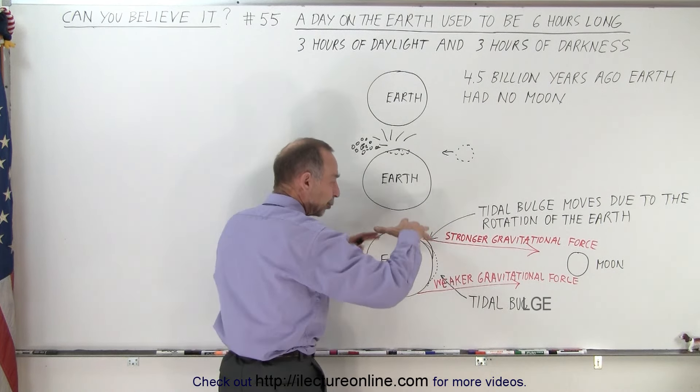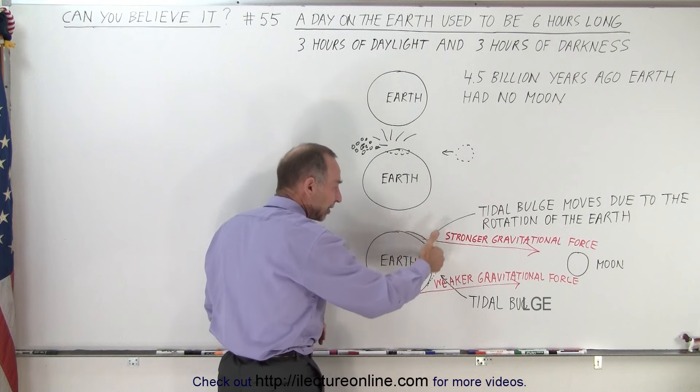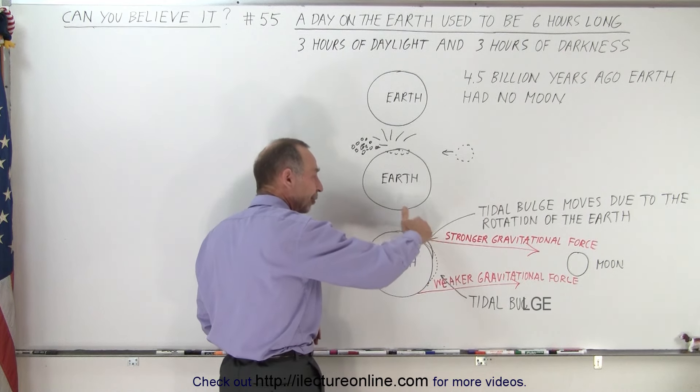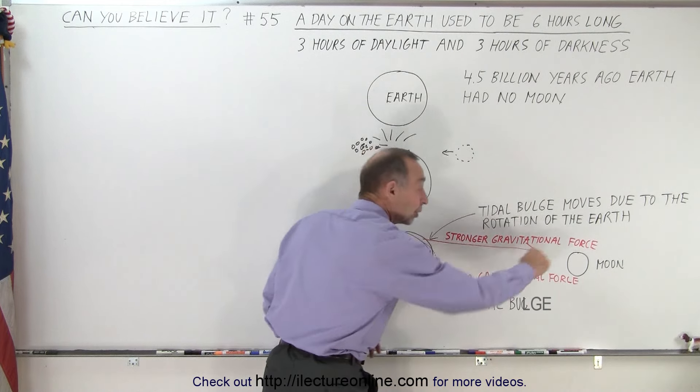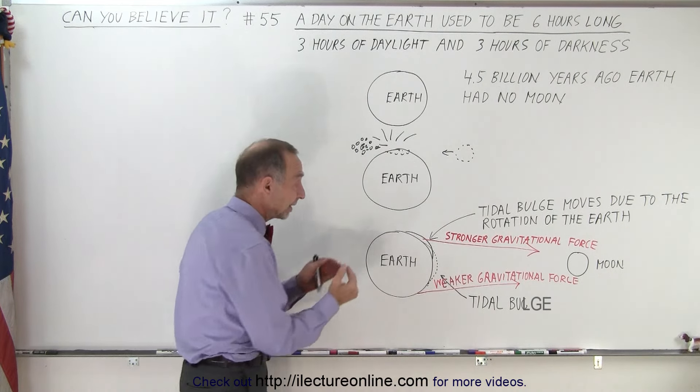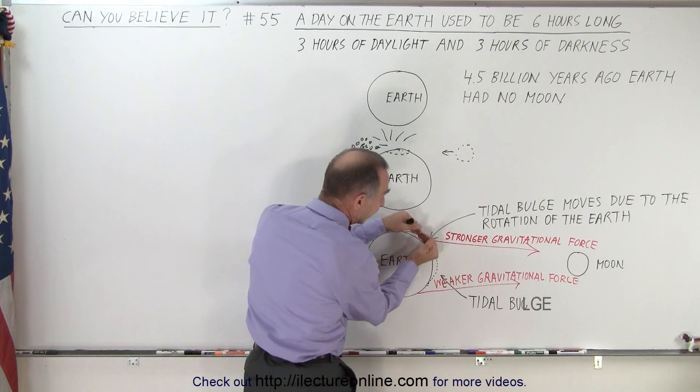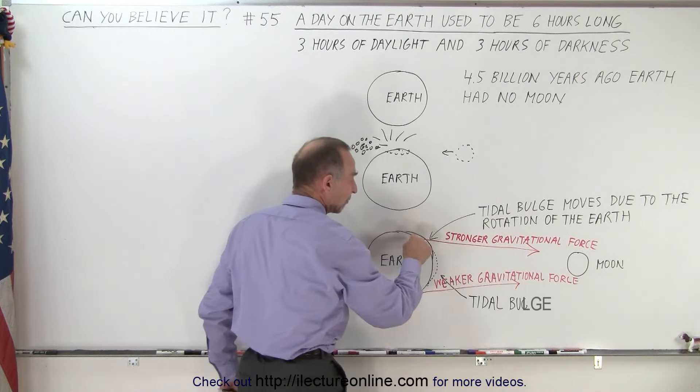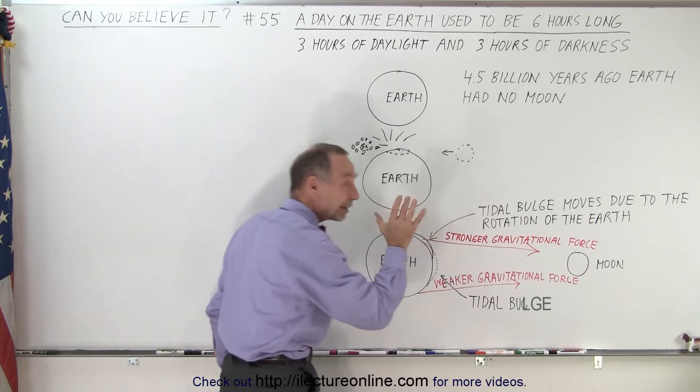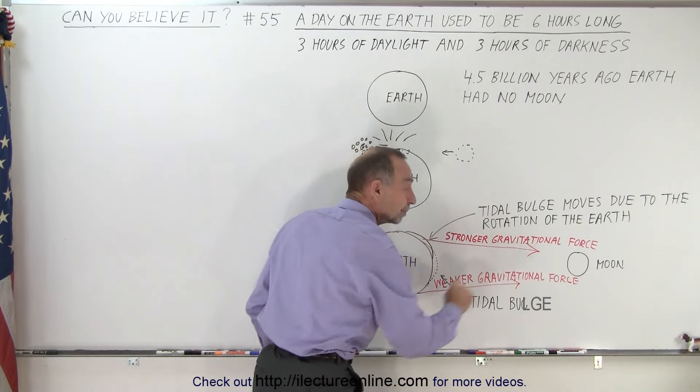In other words, the tidal bulge doesn't get time to resettle back down, and so the tidal bulge is also a little bit further up as the earth rotates away from the direct line between the moon and the earth. Which means that since there's a little bit more mass on this side of the earth, relative to this side of the earth, the gravitational attraction from here to the moon is slightly bigger than the gravitational attraction from here to the moon.